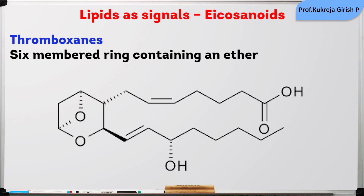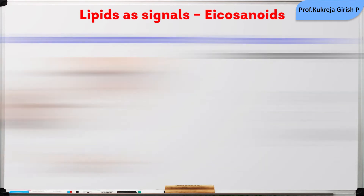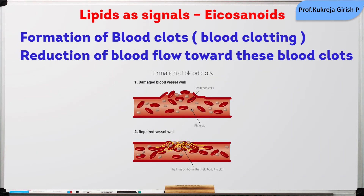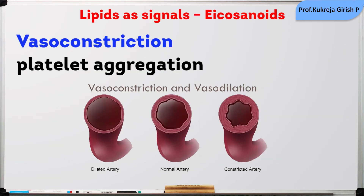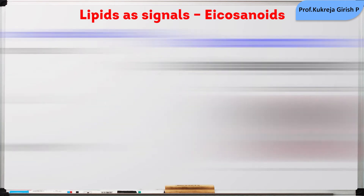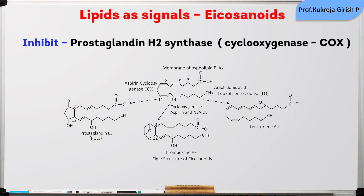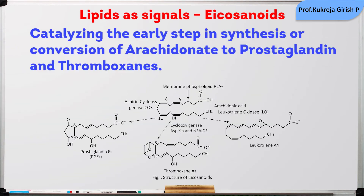Thromboxanes contain a 6-membered ring containing the ether. These are released by the platelets and are involved in blood clotting and reduction of blood flow towards the clot. They are involved in vasoconstriction and platelet aggregation. The non-steroidal anti-inflammatory drugs like aspirin and ibuprofen inhibit the enzyme PGH2 synthase, also known as COX synthase, catalyzing the conversion of arachidonate to prostaglandins and thromboxanes.